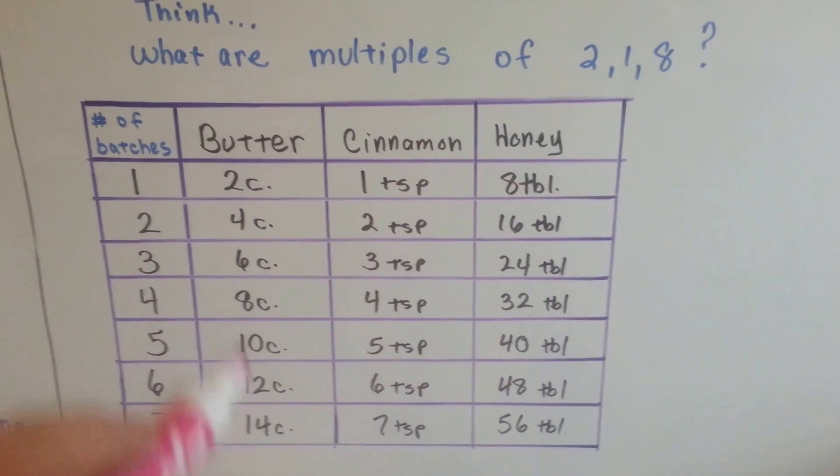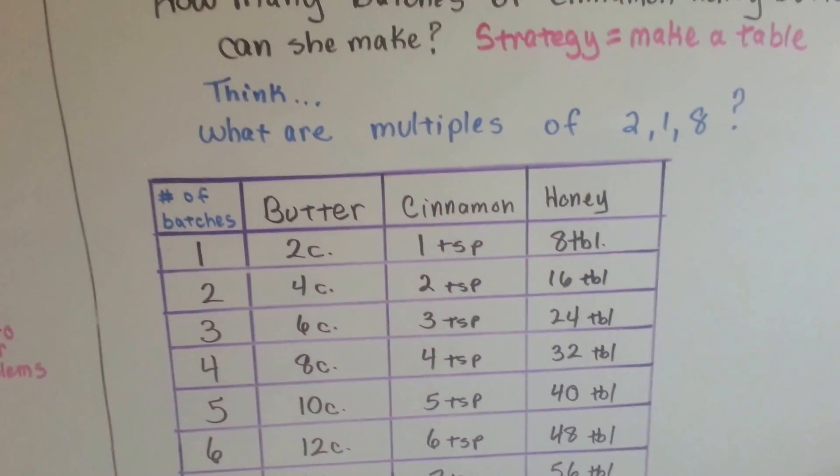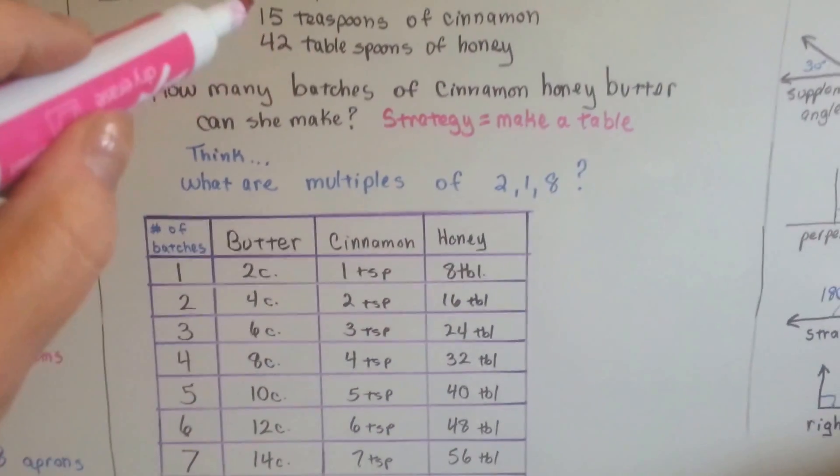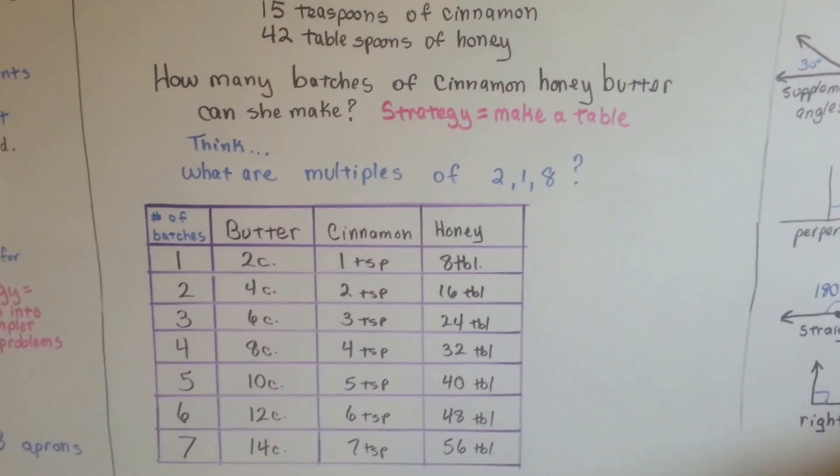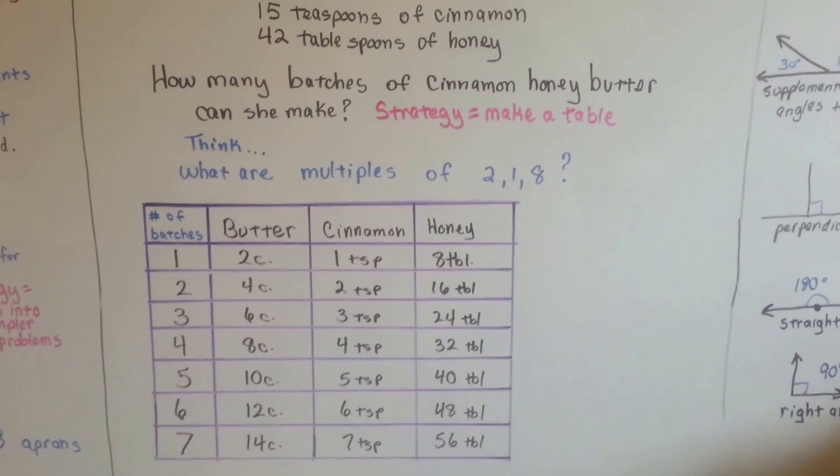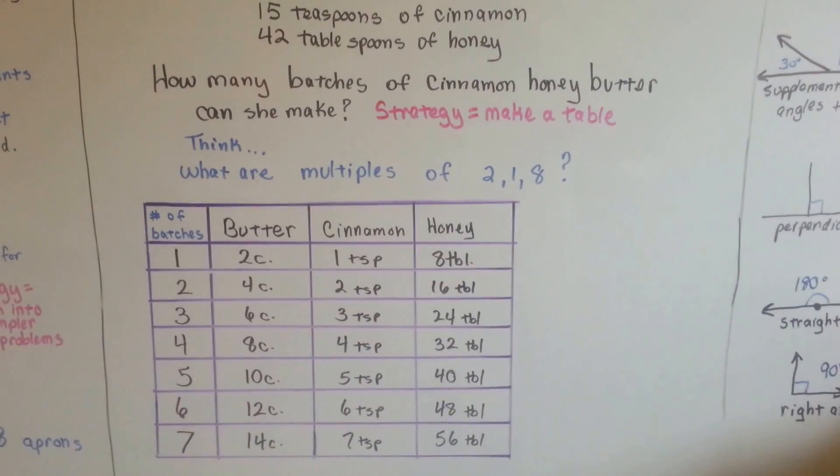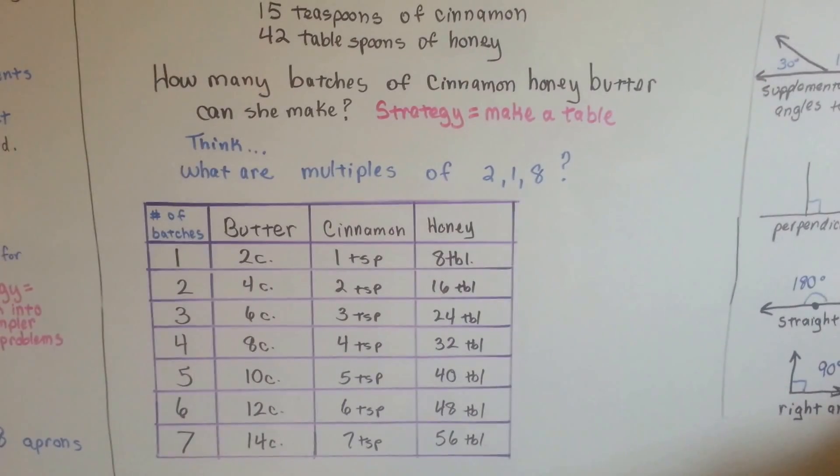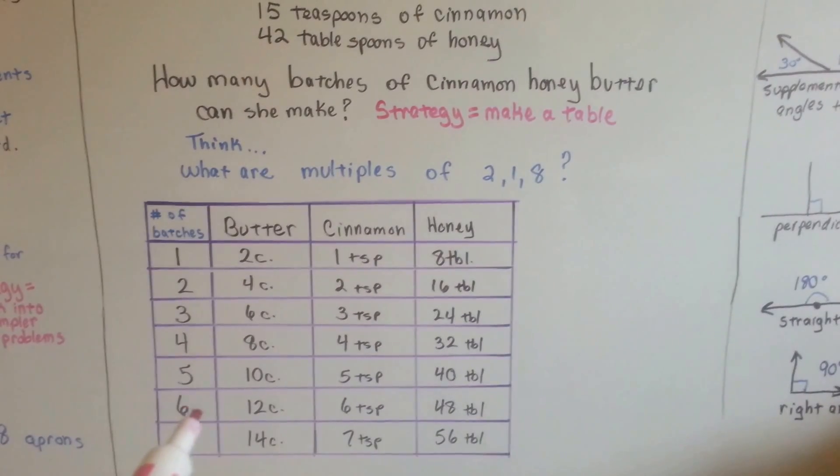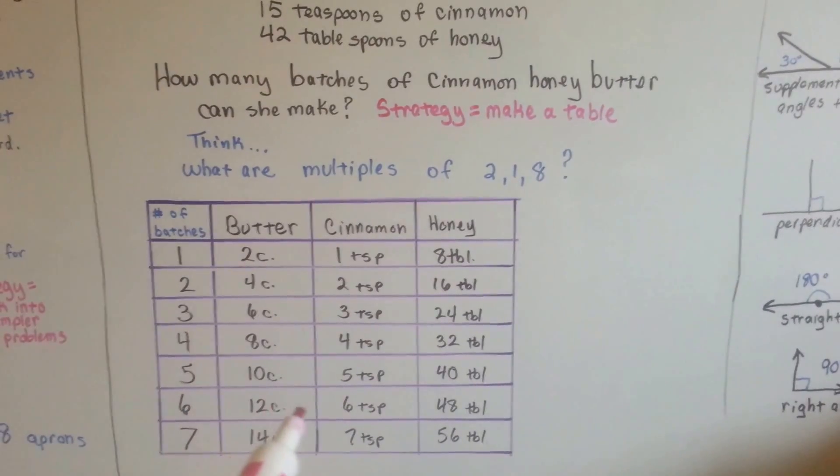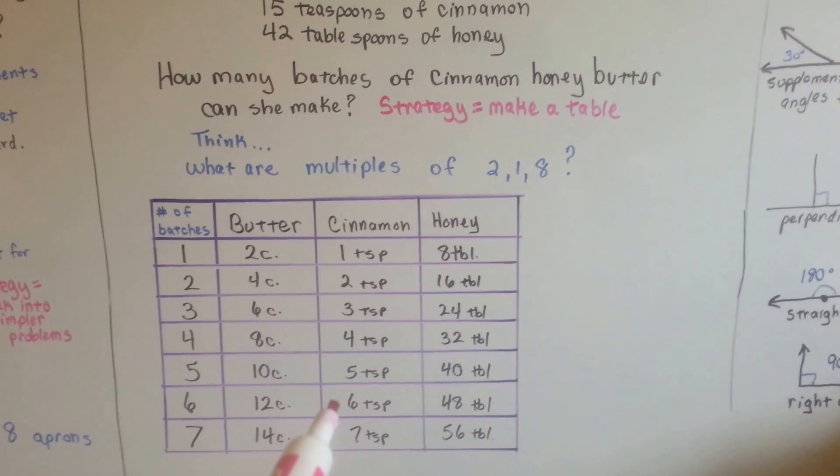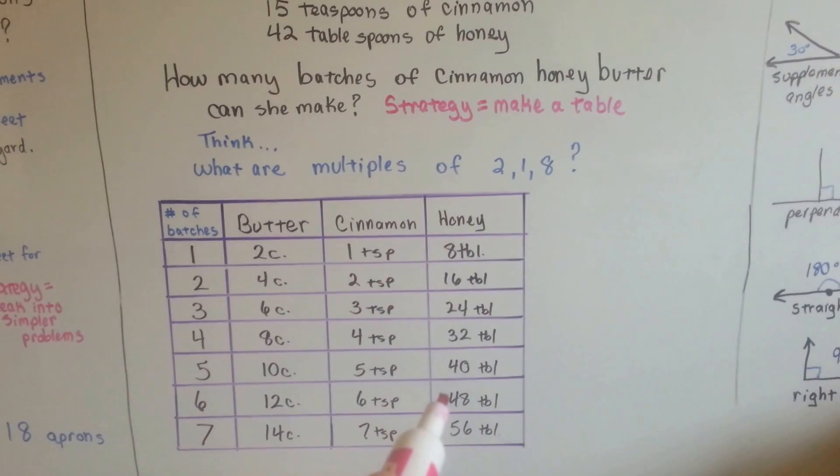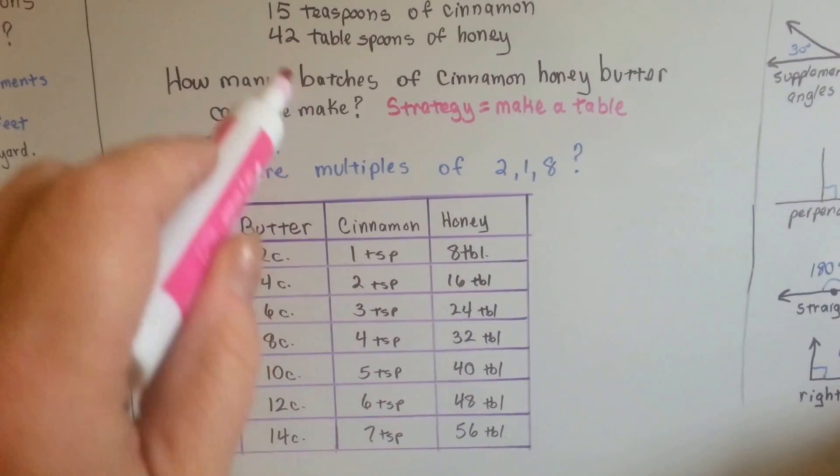So now we get to match the ingredients to the ingredients she has. Here's the ingredients she has. Can you tell how many batches? Full batches that she'll be able to make? Now she might have some ingredients left over, but the important thing is that she has enough for full batches. 12 cups of butter would put her at 6 batches. Then she would need 6 teaspoons of cinnamon. Well, she's got 15, so that would work. But she would need 48 tablespoons of honey. She only has 42.